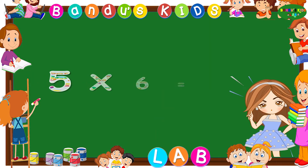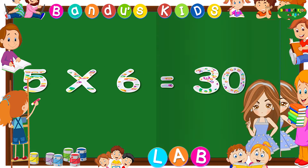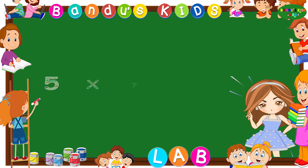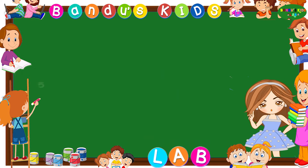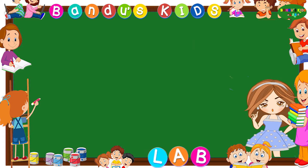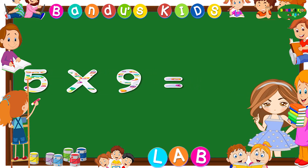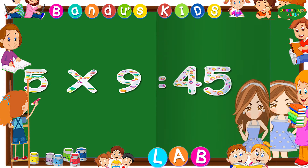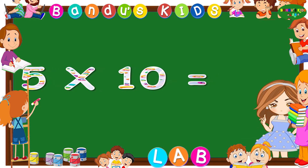Five fives are twenty-five. Five sixes are thirty. Five sevens are thirty-five. Five eights are forty. Five nines are forty-five. Five tens are fifty.